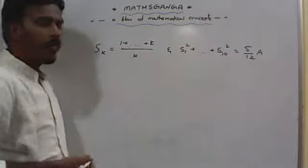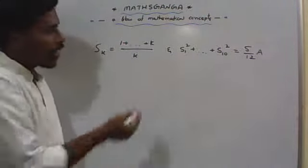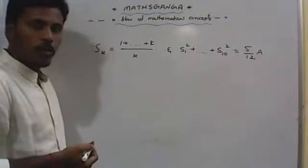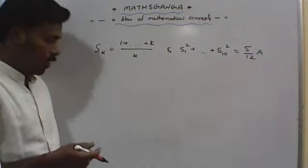Sk is mentioned like this: sum of k natural numbers divided by k. And S1² plus and so on plus S10² is mentioned as 505/a. You need to get the value of a.